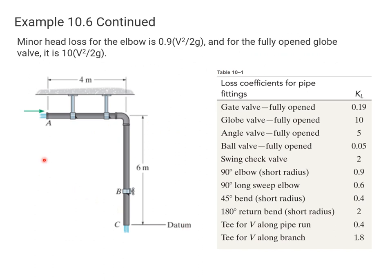Now we need to calculate the minor head losses. For the loss for an elbow, it's 0.9 times V squared over 2G. This is a 90 degree elbow, so we come over to our chart, 0.9. For fully open globe valve, we look at the fully open globe valve, it's 10. So we got two terms there.